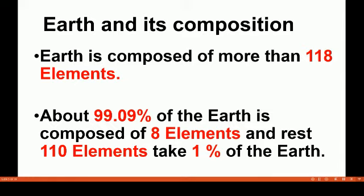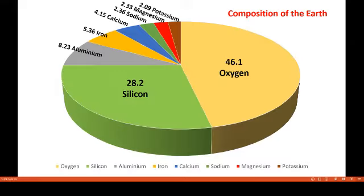Earth, the only planet where life is formed, is composed of more than 118 elements. It is very interesting to note that out of 118 elements, only 8 elements make 99.09% of the Earth, whereas the remaining 110 elements make less than 1% of the Earth. These are the 8 important elements of which Earth is composed.